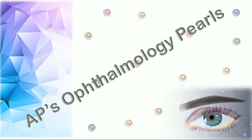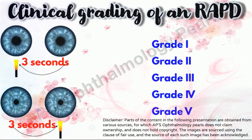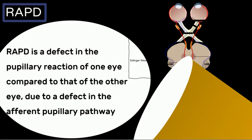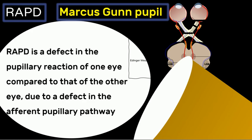Hello viewers, welcome to AP's Ophthalmology Pulse. Today we shall discuss the clinical grading of a relative afferent pupillary defect. In our previous video, we defined an RAPD as a defect in the pupillary reaction of one eye compared to that of the other eye due to a defect in the afferent pupillary pathway. This is also referred to as a Marcus Gunn pupil.